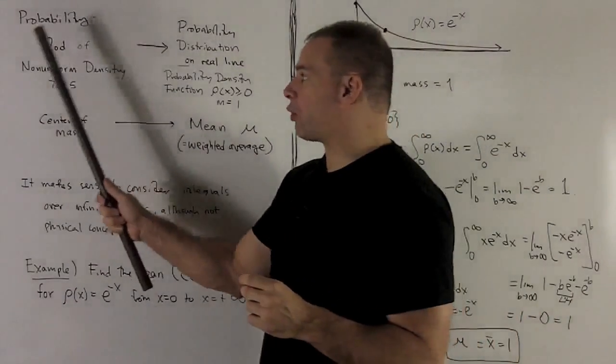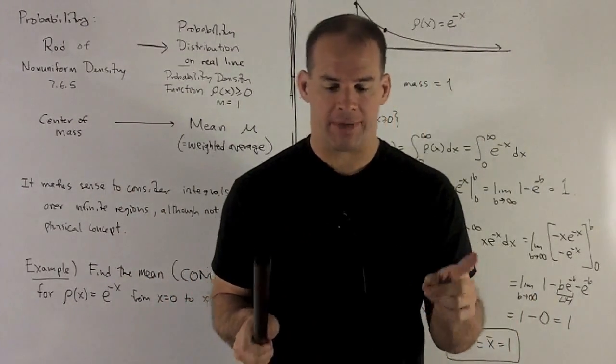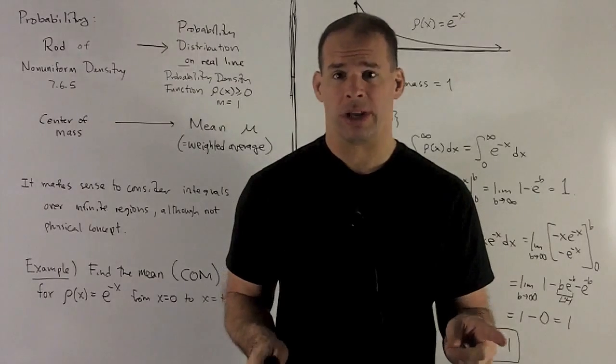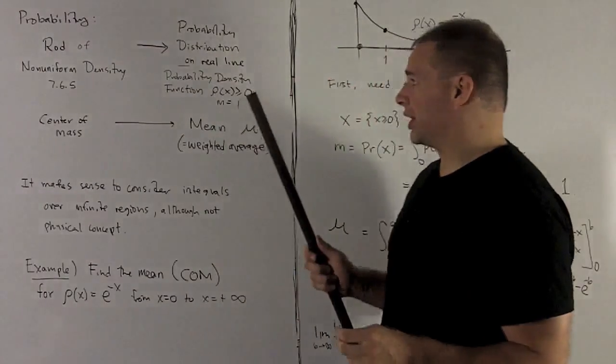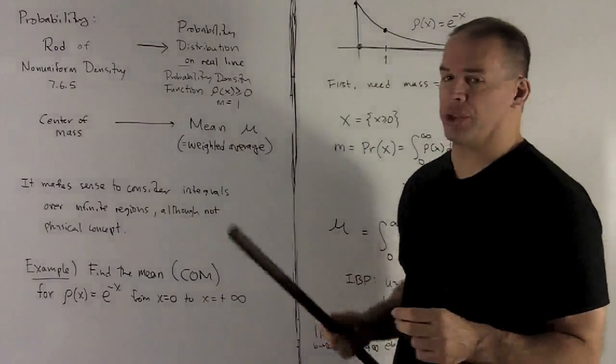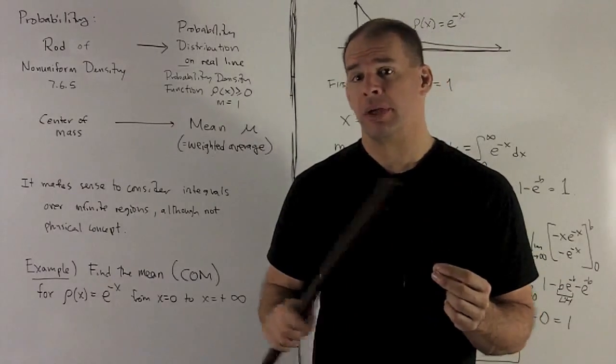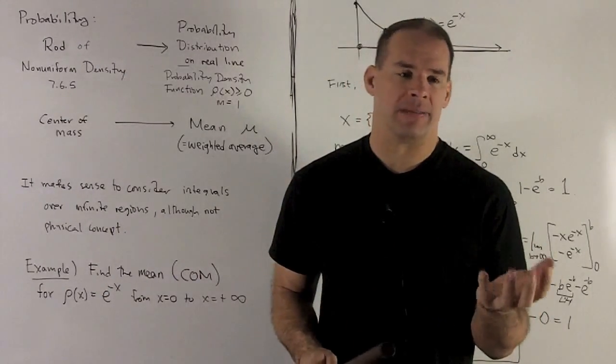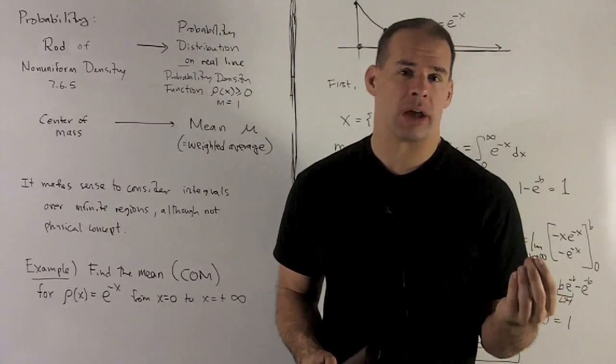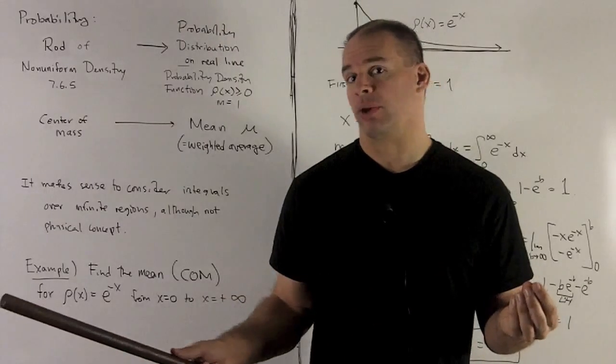So instead of a rod of non-uniform density, which is going to be a finite area cut off from the real line, we're going to consider probability distributions in the real line. So these can be infinite. We wouldn't talk about an infinite rod, but we would talk about infinite subsets of the real line.